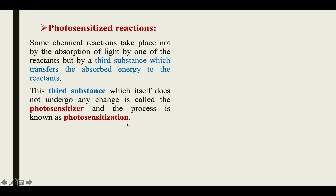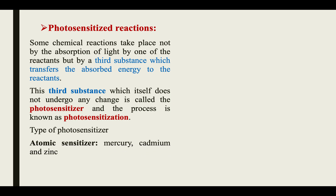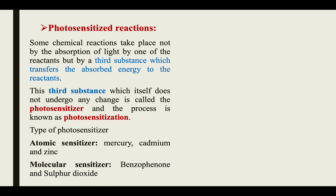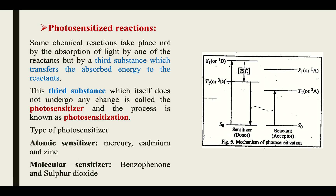The process is known as photosensitization. There are two types of photosensitizers. The first is the atomic sensitizer — commonly used examples are mercury, cadmium, and zinc metals. The second type is the molecular sensitizer, where molecules such as benzophenone and sulfur dioxide are used. Now we are going to see the mechanism of photosensitization.